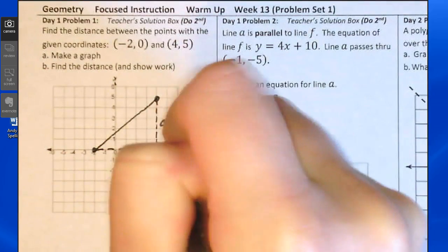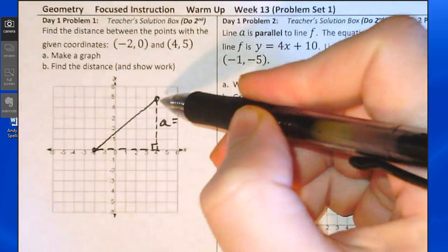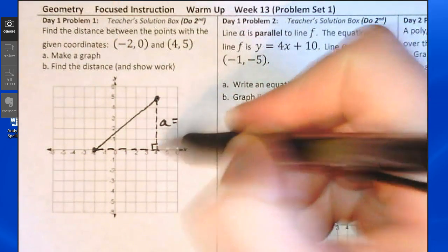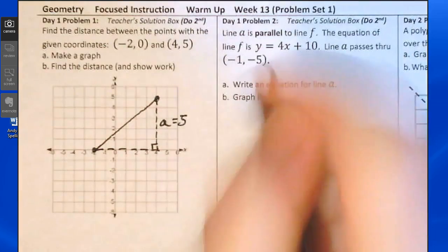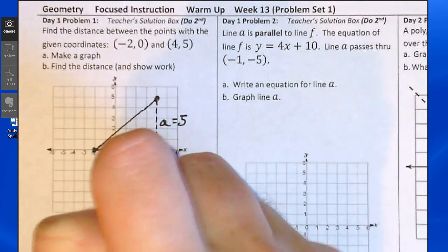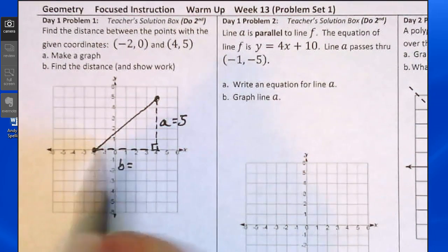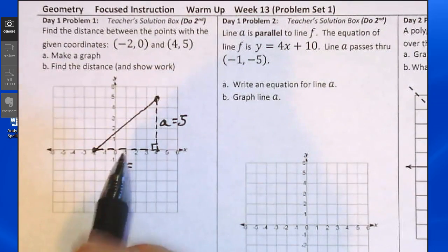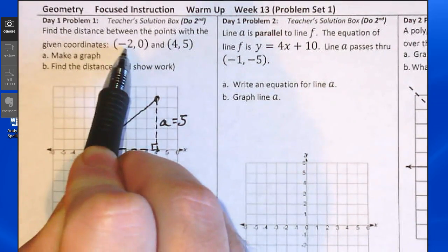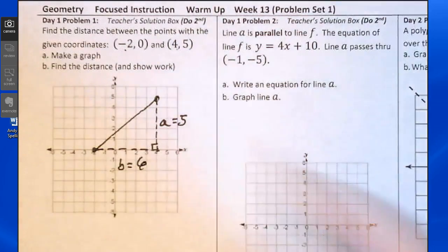The altitude of the triangle is the lowercase a in the Pythagorean Theorem, and from here to here is 5 units. The letter b in the Pythagorean Theorem is the base. From here over to here is 6 units. It's the distance from negative 2 to positive 4 along the x-axis, 6 units.